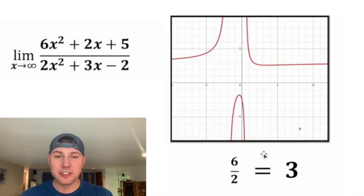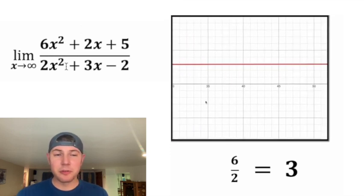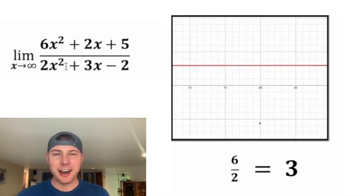And if we were to look at this on a graph, this is where the horizontal asymptote would be. As x gets very large, this graph would approach 3 but never hit it. How exciting.